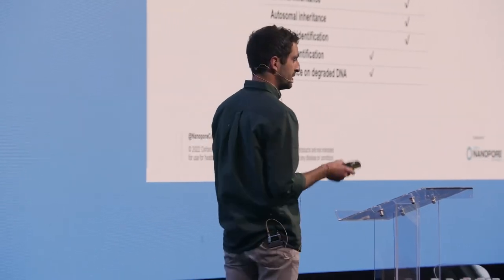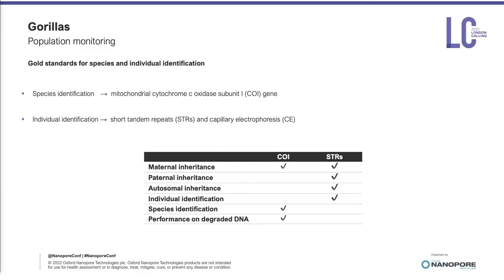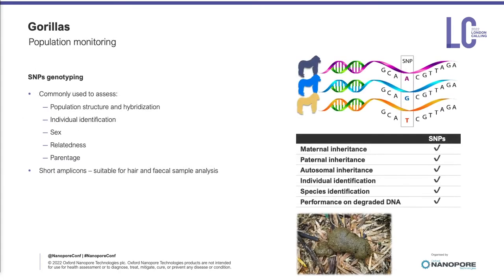Technological advances have allowed researchers to rely on DNA testing in recent decades. In particular, they used capillary electrophoresis of microsatellites for individual identification and mitogenome sequencing for the identification of species. However, the advent of next- and third-generation sequencing have allowed us to access all sorts of different genetic markers, including biparentally inherited single nucleotide polymorphisms, which can and have been successfully used for the identification of both species and individuals.